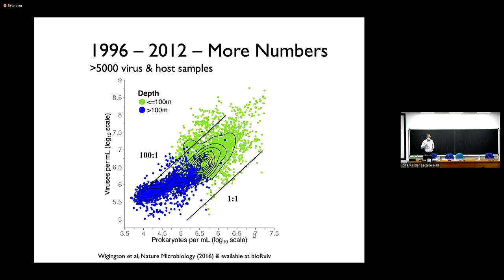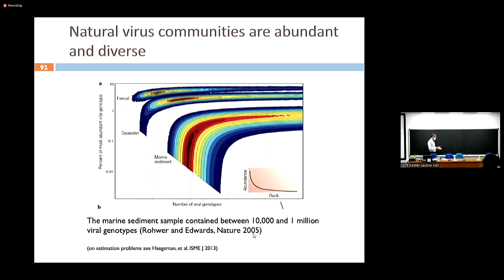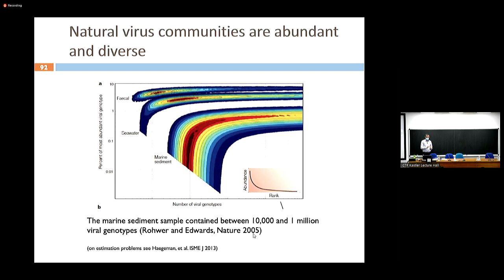We have a lot of bacteria, a lot of viruses, and they're also quite diverse. I'm building an argument as to why we can't just look at single virus-host pairs. People have tried to examine just how diverse systems are. This is something like a collector curve — the x-axis is the number of viral genotypes, the y-axis is the percent of the most abundant type — and you also have more of a rank abundance curve.